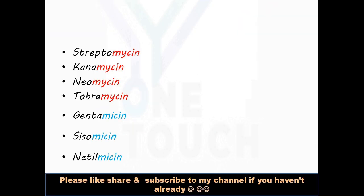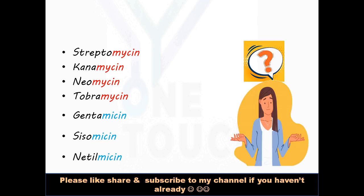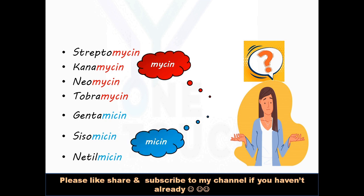Aminoglycosides - Here are some examples of aminoglycosides. Aminoglycosides are obtained from soil actinomycetes. Have you ever wondered why some aminoglycosides like streptomycin, kanamycin are MYCIN whereas others like gentamicin, sisomicin are MICIN? It is based on the type of actinomycetes from which these drugs are obtained.